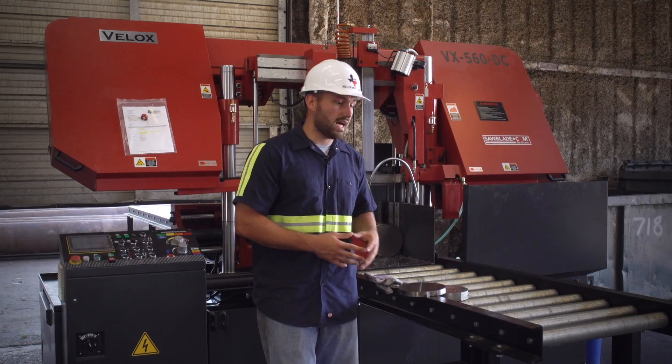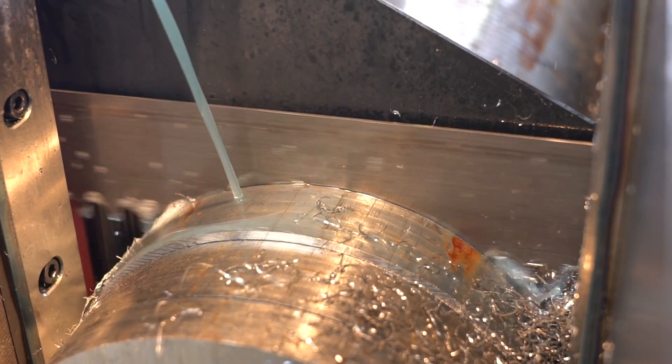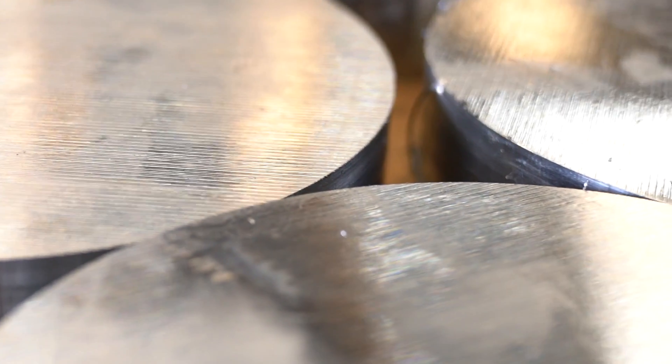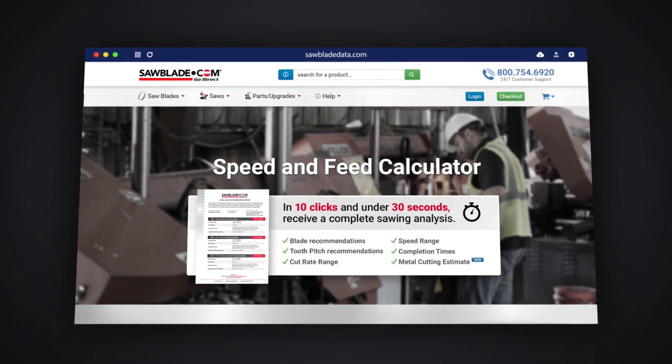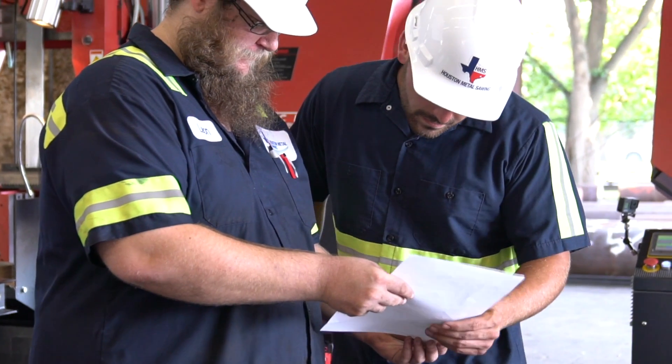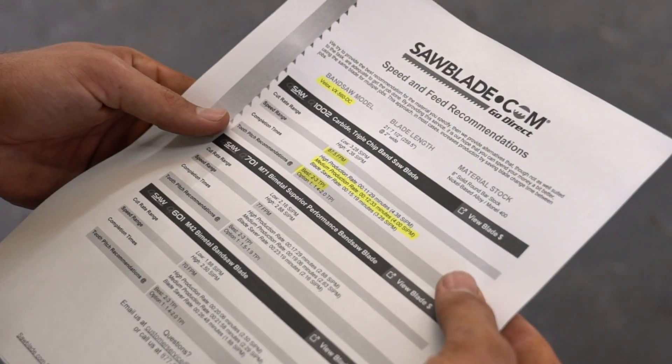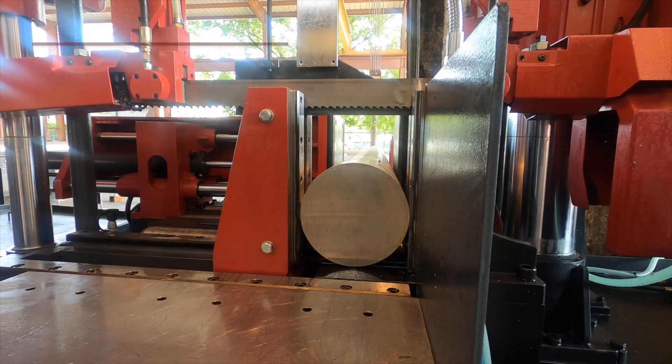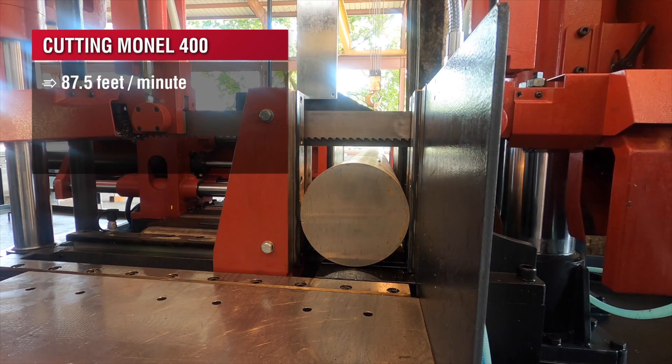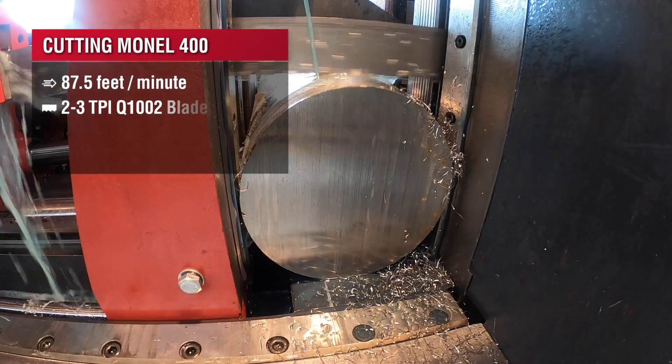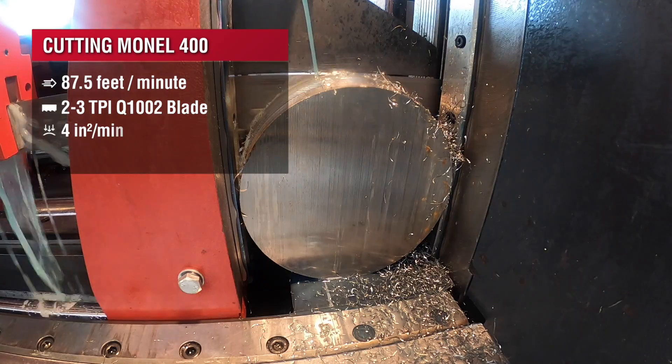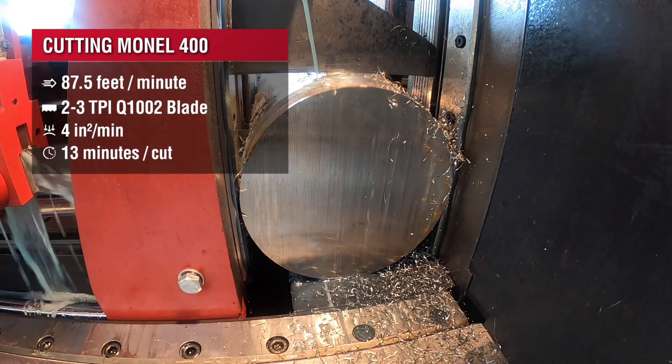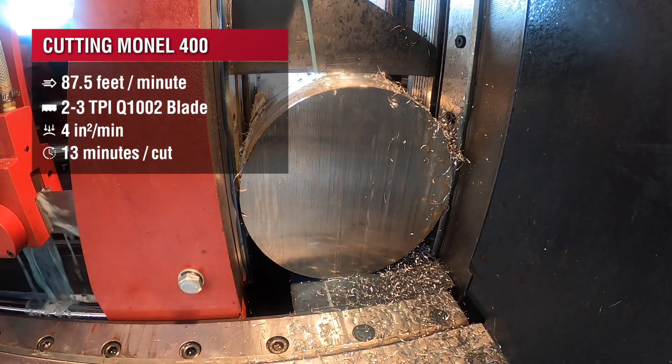When we're cutting such a high value exotic alloy we want to make sure that our cut specs are right on the money. So we're going to be using sawbladedata.com to give us a good starting baseline. At 87.5 feet per minute on blade speed it recommended a 2-3 carbide tip blade which we have equipped here on our 560, and it said that we should be cutting at four square inches a minute which through an eight inch solid would be about 12 to 13 minutes a cut.